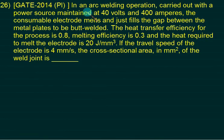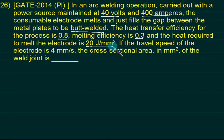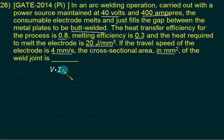In an arc welding operation carried out with a power source maintained at 40 volts and 400 amperes, the consumable electrode melts and just fills the gap between the metal plates to be butt welded. The heat transfer efficiency for the process is 0.8. Melting efficiency is 0.3. The heat required to melt the electrode is 20 joules per mm³ — unit melting energy per unit volume. The travel speed of the electrode is 4 mm per second. We want to find the cross-section. How much ideal power is available? It is V into I, which is joules per second.